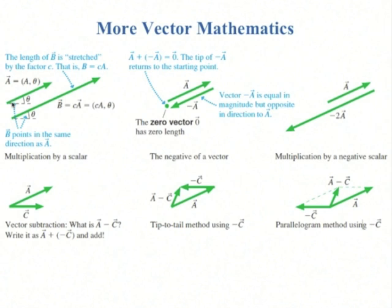You can multiply a vector by a positive scalar and you end up with another vector in the same direction but changed in magnitude by the scalar. You can make a negative vector by just reversing the direction of the vector and keeping the same magnitude. The zero vector has zero length, and that would be if you add a plus negative a, you get zero. You can multiply a vector by a negative scalar, in which case you change the magnitude by the absolute value of that scalar and you reverse the direction of the vector.